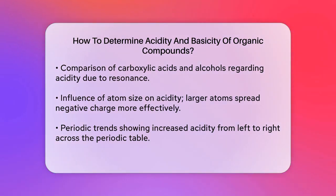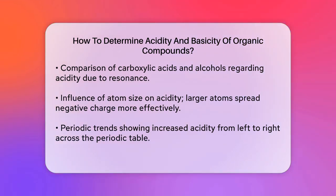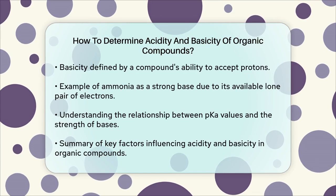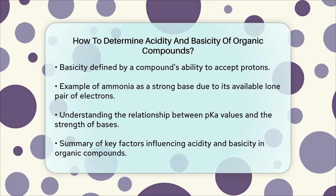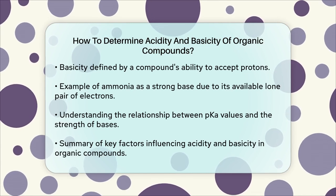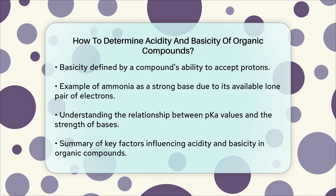Periodic trends. When moving across a period in the periodic table, acidity increases from left to right because electronegativity increases. This means that as you go from left to right, the atoms become more electronegative, pulling electrons away from hydrogen and making it easier for the hydrogen to be released as a proton.